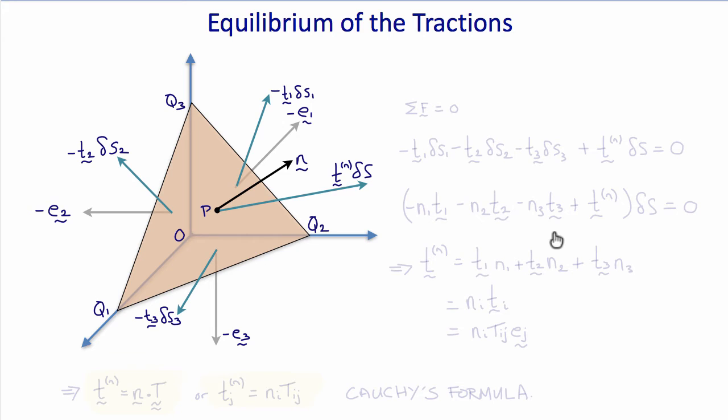So equilibrium says that the sum of the forces is zero, sigma f equals zero. So that means that minus T1 times delta s1 minus T2 times delta s2 minus T3 times delta s3 plus Tn times delta s equals zero for the body in equilibrium.